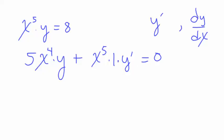Now if we were asked to find dy over dx, we'd be writing dy over dx right here. That's worth noting. x to the fifth times y prime equals - so we'll take this part over to the right-hand side and it becomes negative.